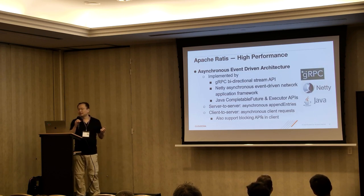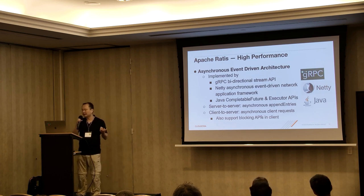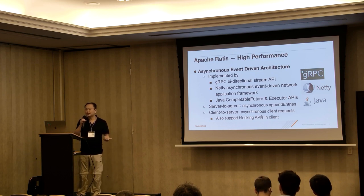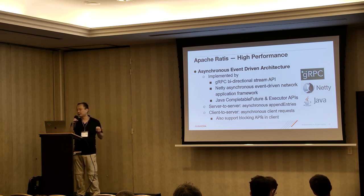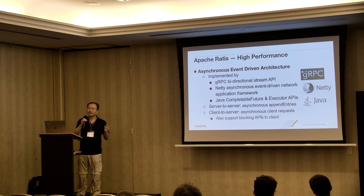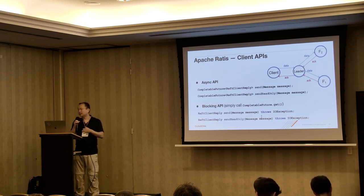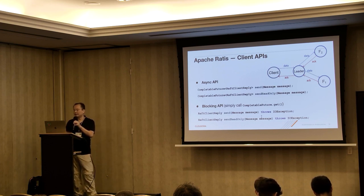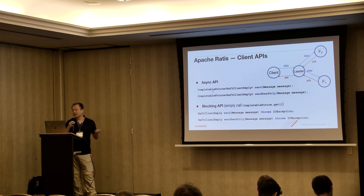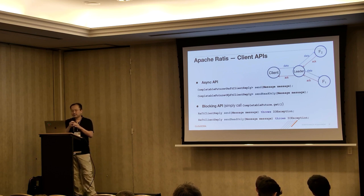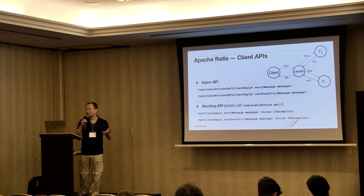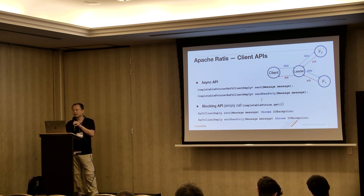Apache Ratis is high performance. One reason is that we have an asynchronous event-driven architecture, implemented via gRPC, Netty, and Java CompletableFuture and executor APIs. Server-to-server append-entry communication is asynchronous, and client-to-server communication is also asynchronous. We have an async API for client requests — when a client has a request, it sends the request to the leader, and you can use send message and get back a future that may complete later. You can also send with an order request and get back a future. For the blocking API, we just use the async API and call get on the future, making it a blocking API.